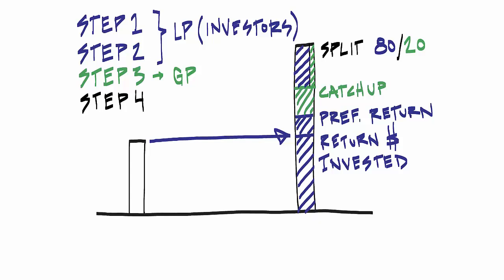And if it helps to think about it as a waterfall, you can think of the cash inflows flowing through this bar. So here you would see first dollars out being the original capital returned to the investors, plus their preferred return. And then the catch-up to the general partnership.